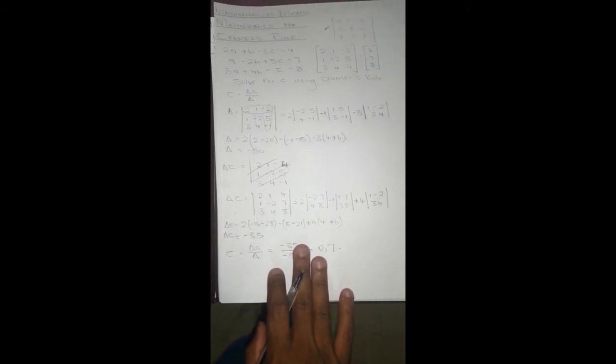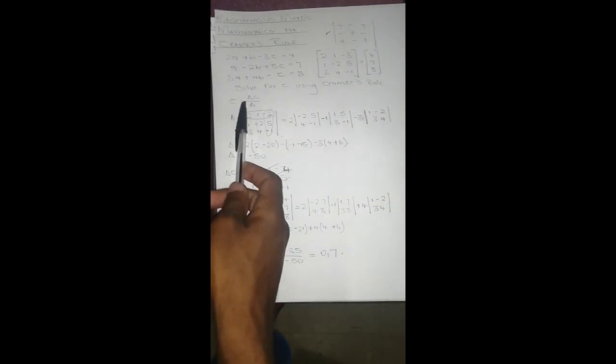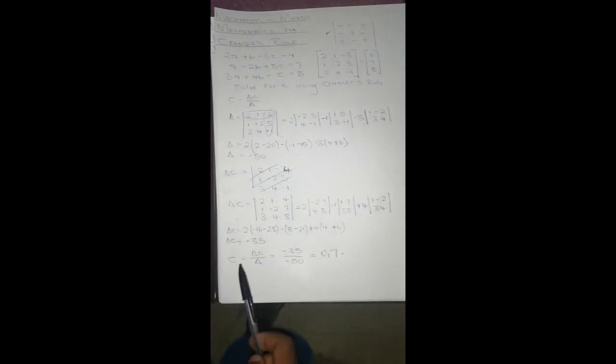So this is all about calculating a variable in a third order system of equations using Cramer's Rule. You get the determinant for the whole matrix, then the determinant for that specific variable by substituting its coefficients with the constants. Then Delta of that variable over Delta gives your answer. Similarly for A and B, you replace their respective coefficients with the constants.